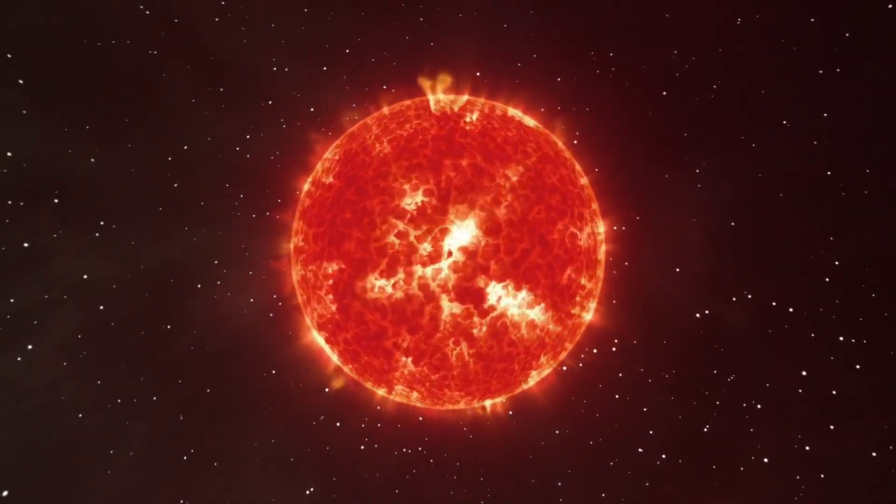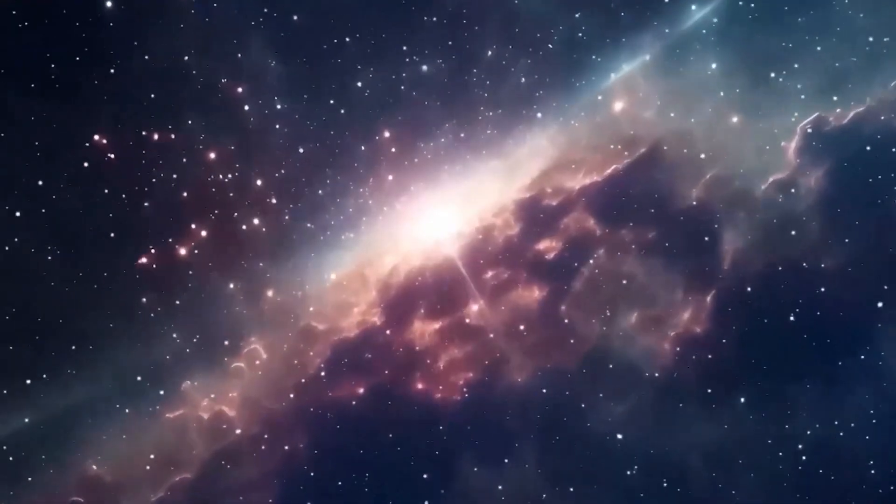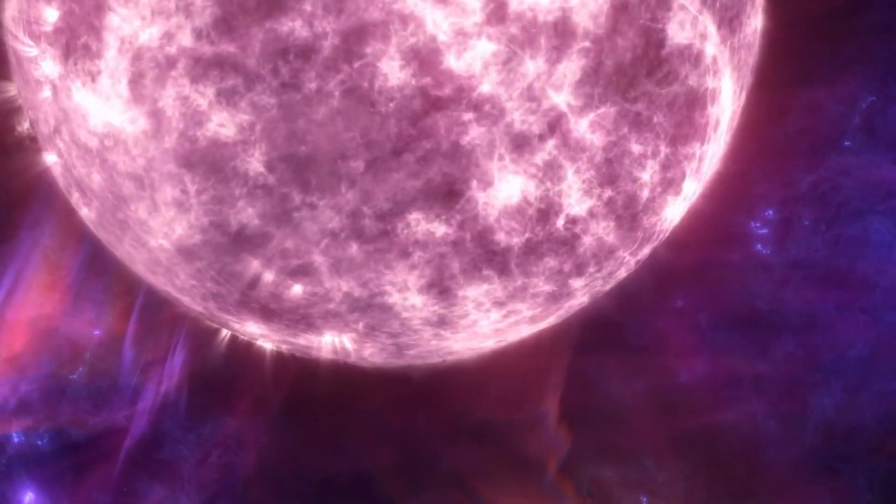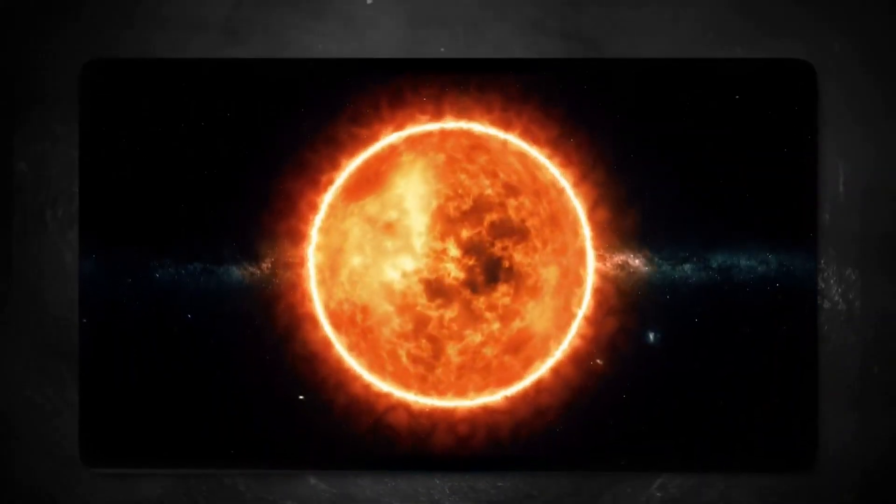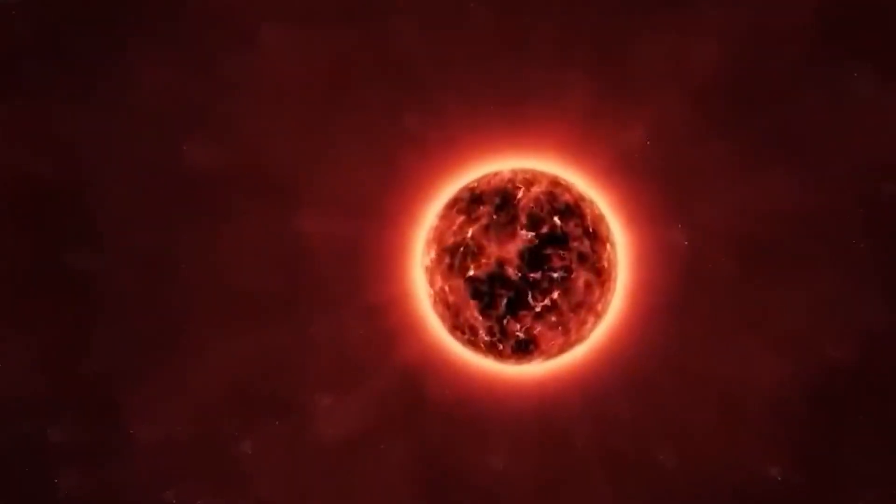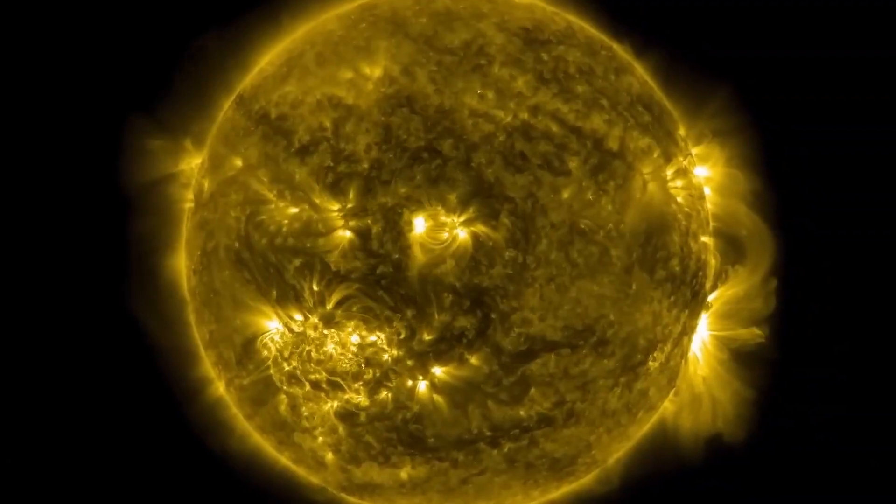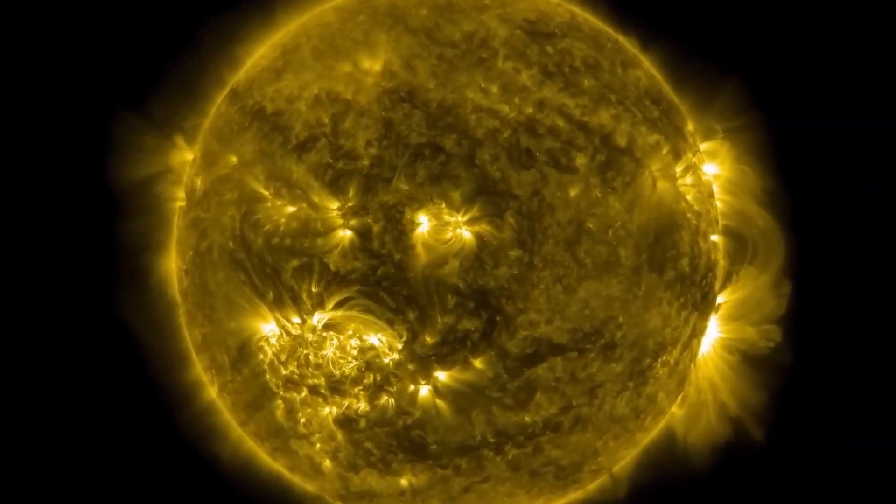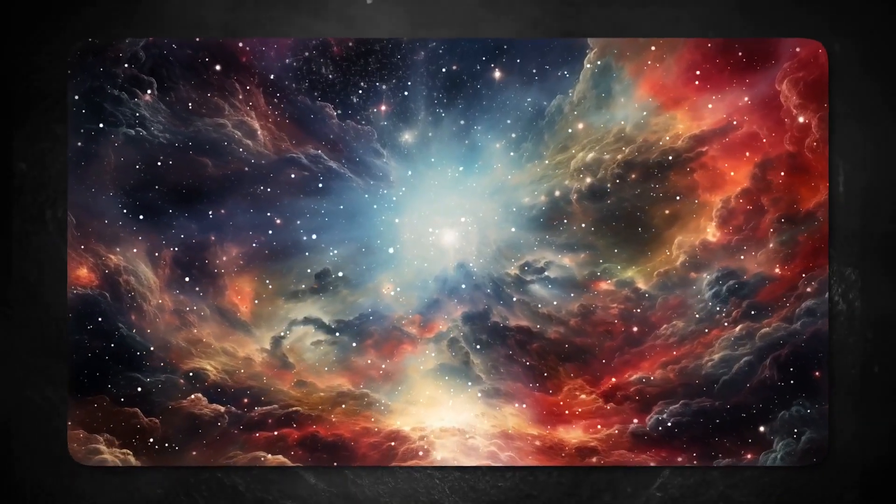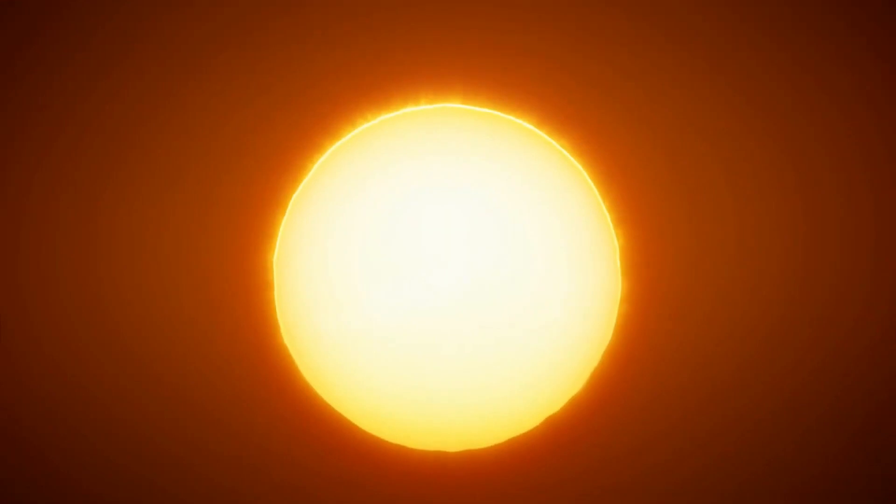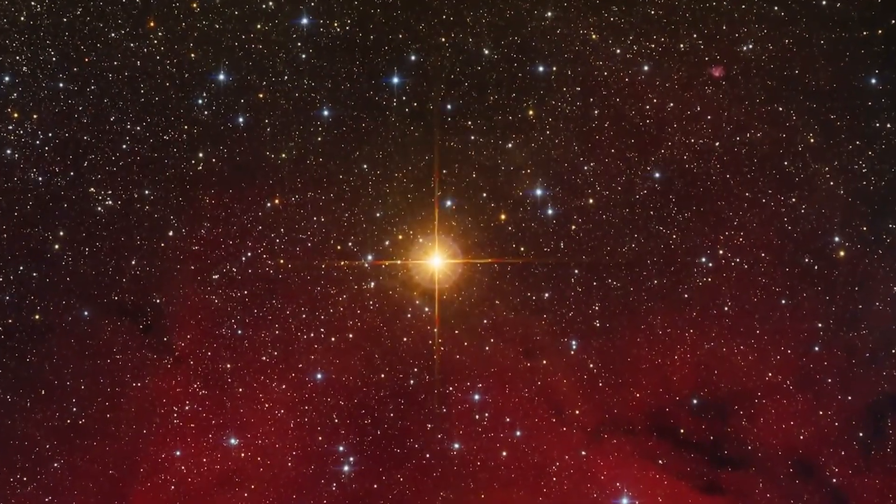Like Betelgeuse, Antares shines brightly and can be seen in the night sky in the constellation Scorpius. Its brightness changes, making it look a little brighter or darker at times, which makes us think of how the world is always changing. On the other hand, Mu Cephei, also known as the Garnet Star, is one of the brightest stars in the sky. Its brightness ranges from 3.4 to 5.1.